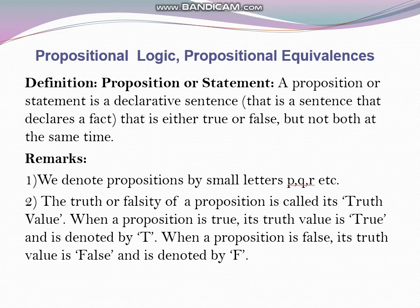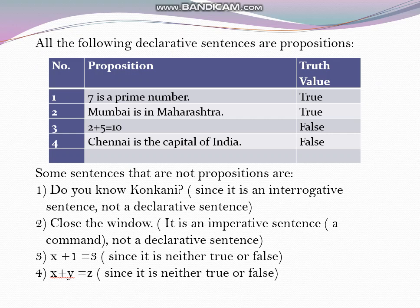Let us see examples for a better understanding. First: '7 is a prime number.' Since it is a fact and a declarative sentence, it is a proposition — truth value is true. Second: 'Mumbai is in Maharashtra' — also a proposition, truth value is true. Third: '2 plus 5 equals 10.' Even though the sentence is incorrect, it is a declarative sentence, so the truth value is false. Fourth: 'Chennai is the capital of India' — we can decide it is false, so it is a false proposition.